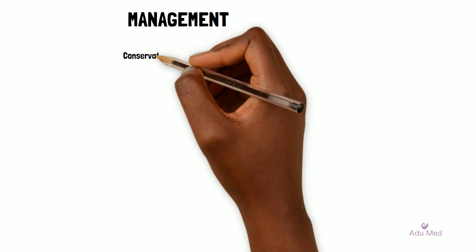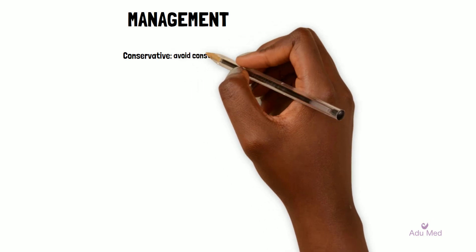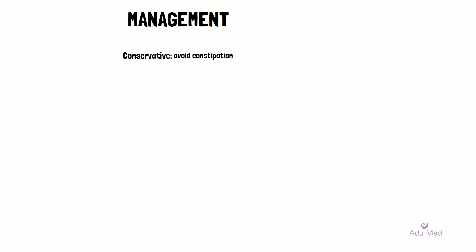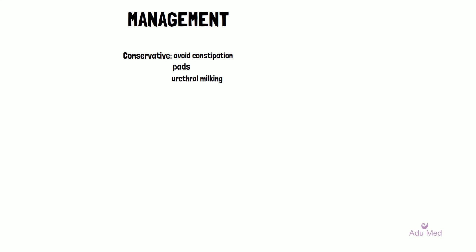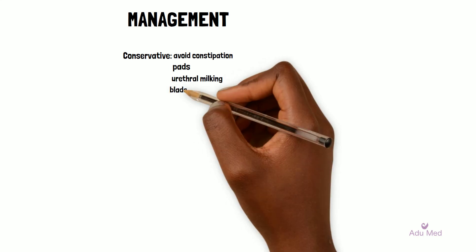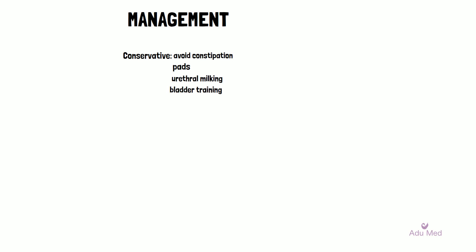Managing lower urinary tract symptoms in a conservative way includes giving advice on fluid intake. Patients should avoid constipation and can consider the use of incontinence pads. Urethral milking is also suggested for men with post-micturition dribbling. Bladder training is helpful for patients with overactive bladder or storage symptoms, and patients can also be referred to the local continence nurse for supervised bladder training.